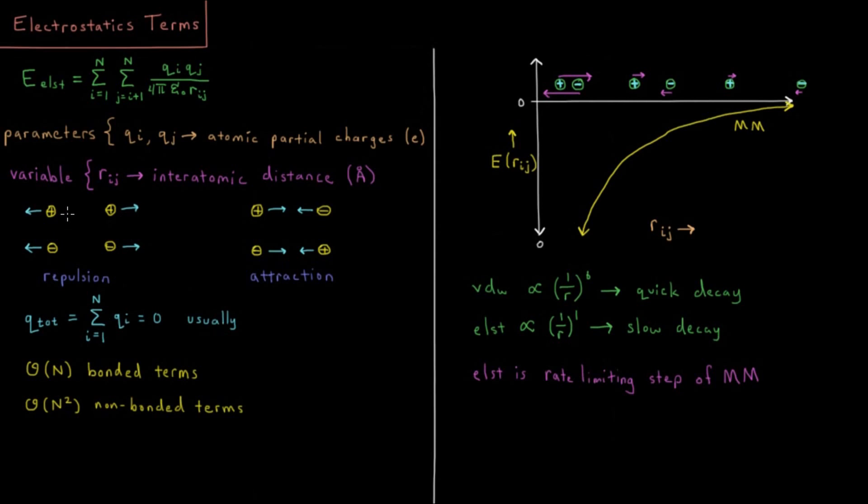What we're familiar with intuitively from electrostatics is that like charges repel one another. Positive and positive are repulsive, negative and negative are repulsive. Whereas opposite charges attract; positive-negative or negative-positive result in a net attraction.